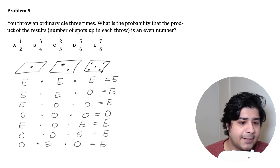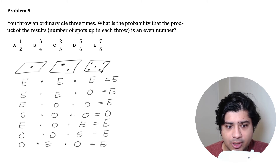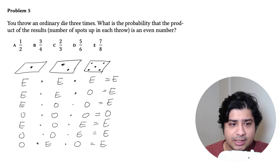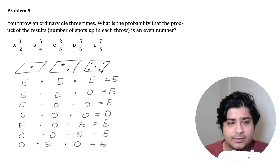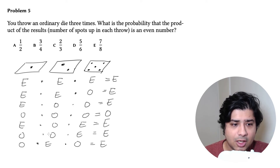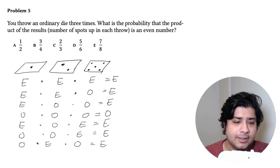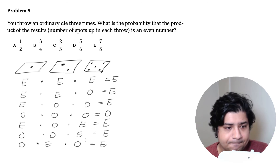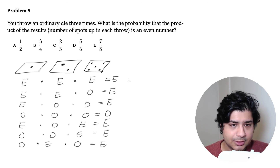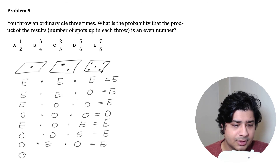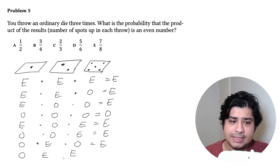Are there any we forgot? Let's check. We have all-even, all-odd, even-even-odd, even-odd-odd, even-odd-even, odd-odd-even, and odd-even-odd. The one we're still missing is odd, even, even. That's first die odd, then two evens at the end — and that will also give an even product.